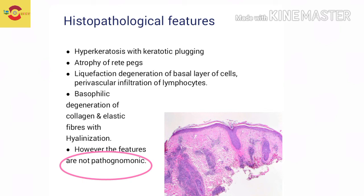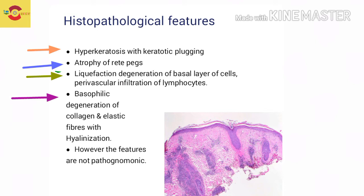The histopathological features include hyperkeratosis with keratotic plugging, atrophy of the rete pegs, then basophilic degeneration of collagen and elastic fibers with hyalinization. Let us move to another important point regarding investigations of Systemic Lupus Erythematosus.